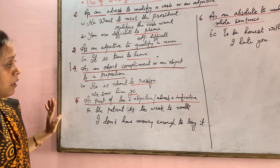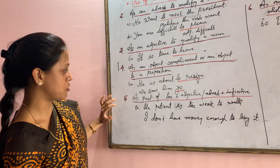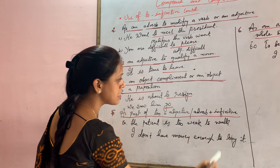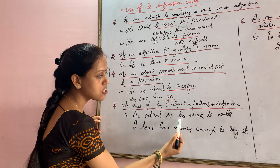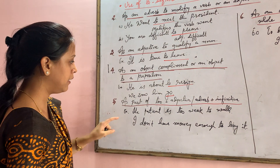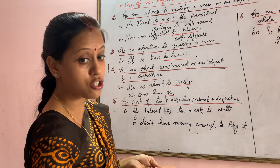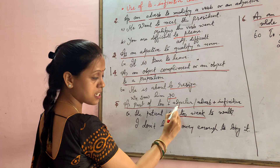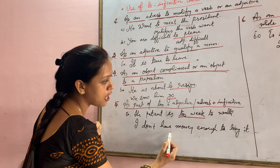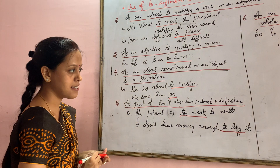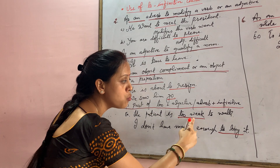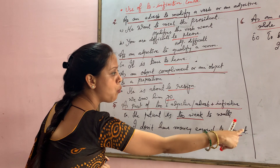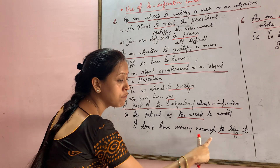The to-infinitive is also used as part of the 'too + adjective + infinitive' pattern. For example: 'The patient is too weak to walk.' Here, 'too weak to walk' combines an adjective with the infinitive. Another example: 'I don't have money enough to buy it.'